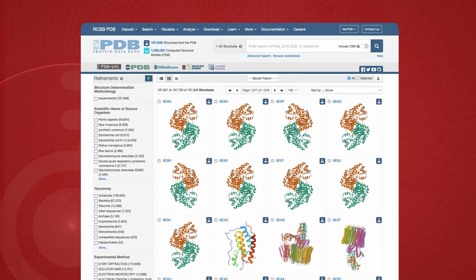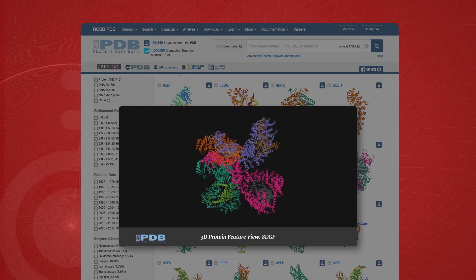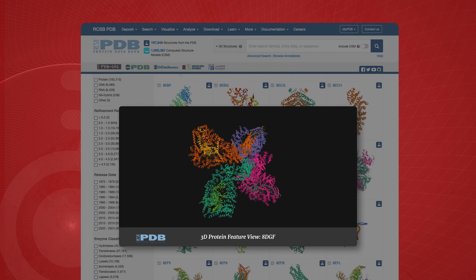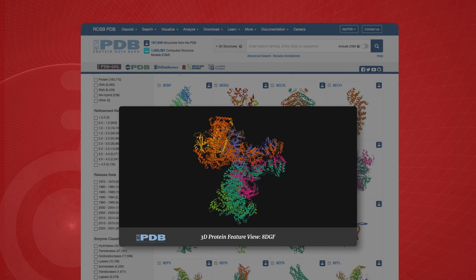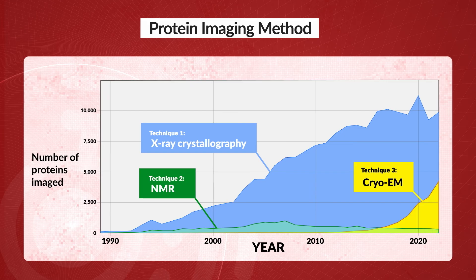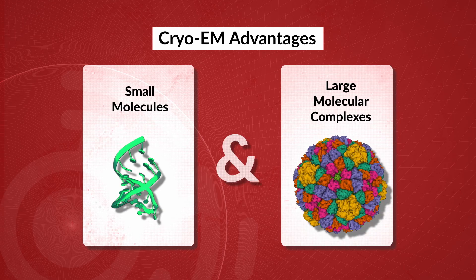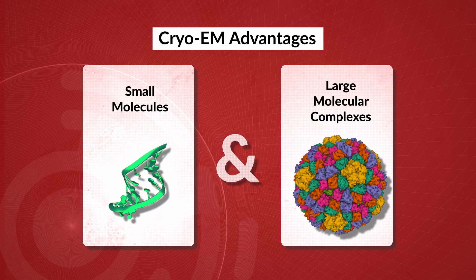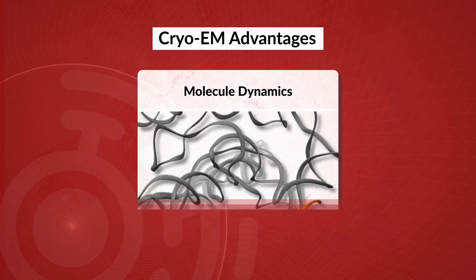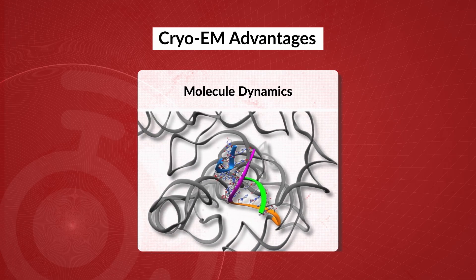Scientists today have collected and documented the structures of about 200,000 proteins. All these proteins are fundamental to everything that organisms do. These 3D models had mostly been resolved by two techniques up until recently. Today, Cryo-EM is becoming a dominant technique. The advantage of Cryo-EM is that it can image both small and large molecules. It can also image molecules' dynamics, showing how they behave and interact in their natural environments.